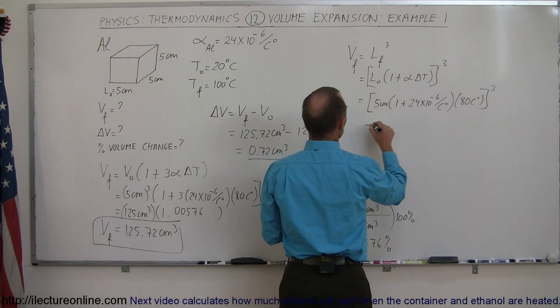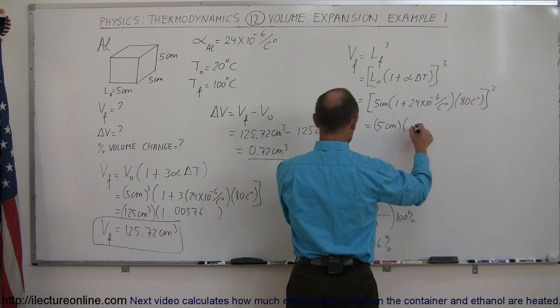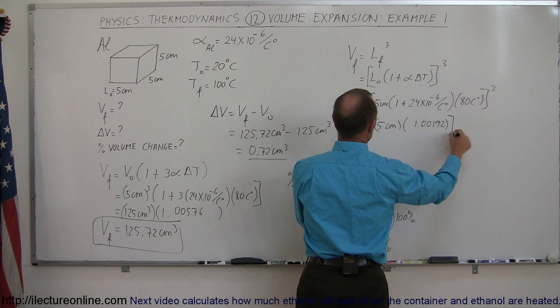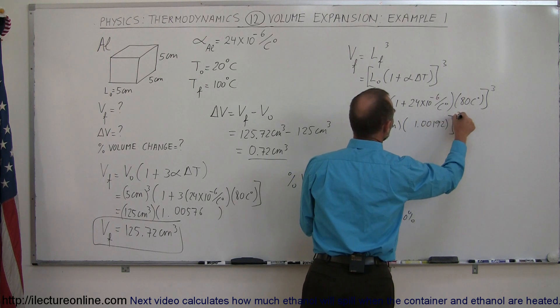So 24e to the minus 6 times 80 plus 1. So this is equal to 5 centimeters times 1.00192, and then we take the whole quantity right here, and we cube it.